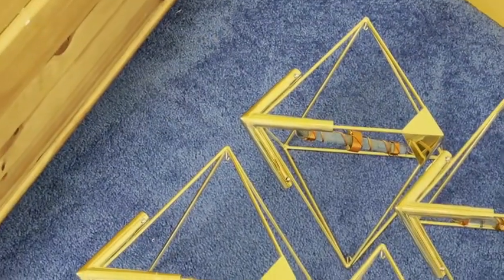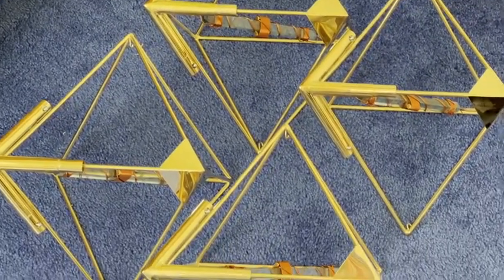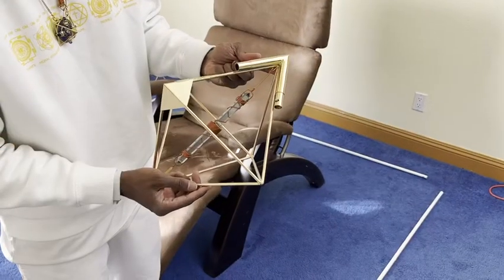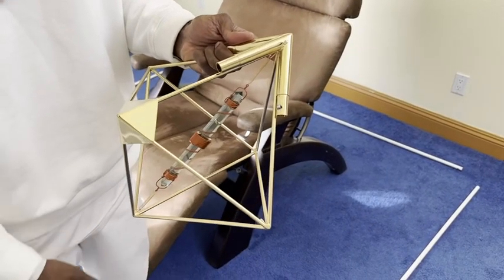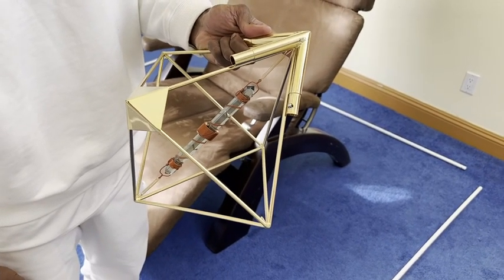So after we put our base poles in a square, we grab our connectors and connect it to the base. Each corner connector has a snap lock, and then we just snap the base poles in.